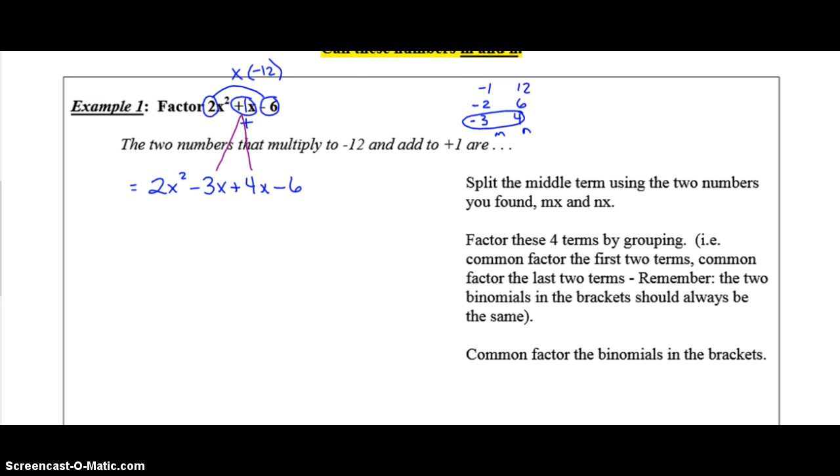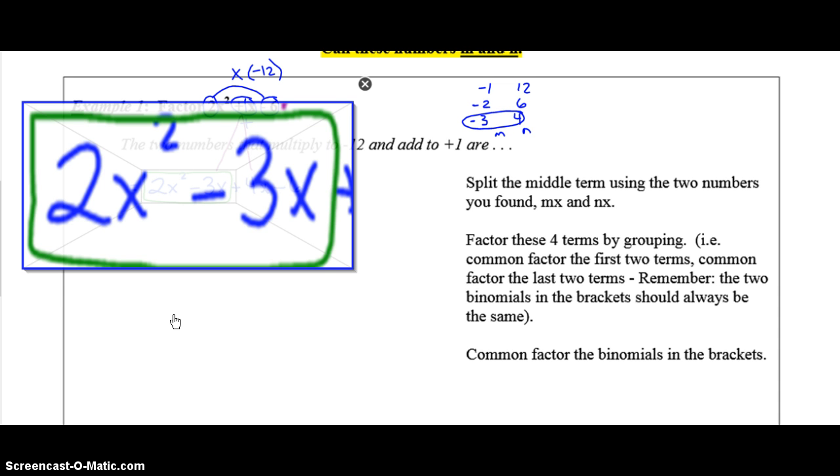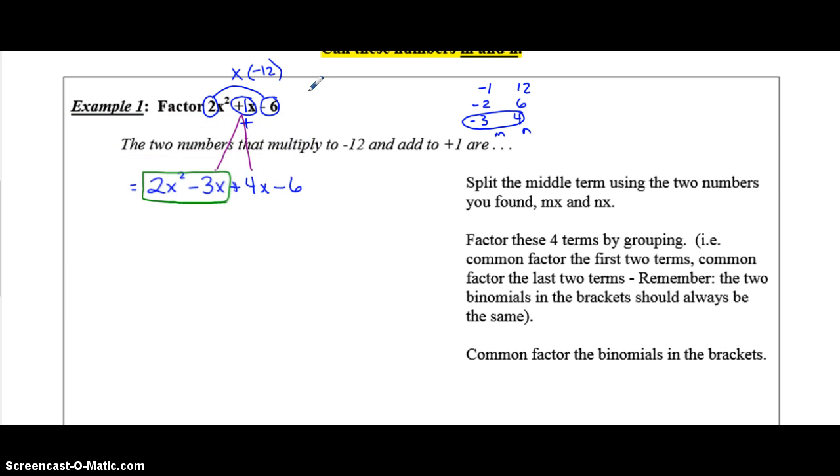Alright, from here, because there's four terms, if you remember, we are now going to factor by grouping. So, you put a box around the first two terms. And, if you remember, to factor by grouping, you first pretend that the second two terms don't exist, and you only look at the first two terms. What can you common factor out of 2x squared and negative 3x? The only thing that you can factor is 1x. Or, just x. So, we're going to common factor out an x. And, you'll be left with 2x minus 3.